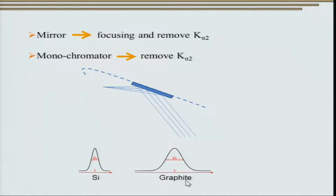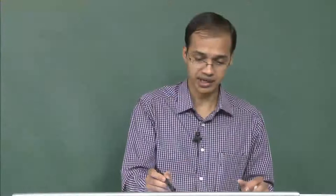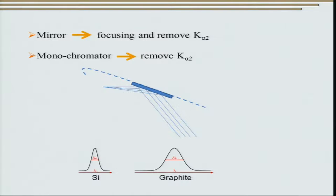We can also use a monochromator, which consists of a particular crystal such as silicon or graphite. Silicon is a much better monochromator than graphite for separating Kα2. Additionally, though X-rays cannot truly be focused, mirrors can limit X-ray divergence, ensuring a coherent X-ray beam that is well-defined in spatial dimensions.